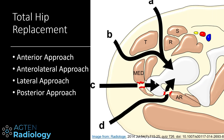When the orthopedic surgeon is doing a total hip replacement, he has four different approaches that he can enter the joint, and these are the four classic approaches.